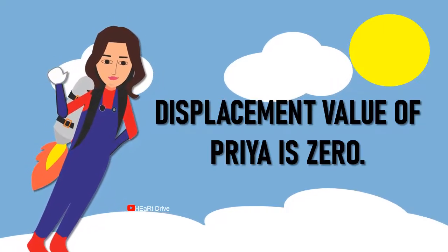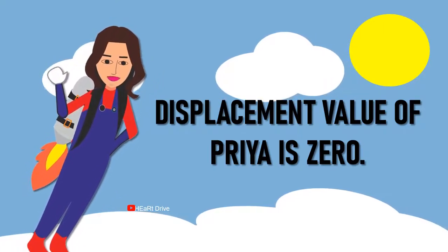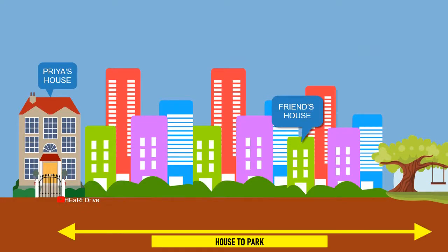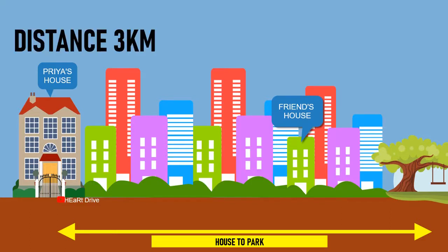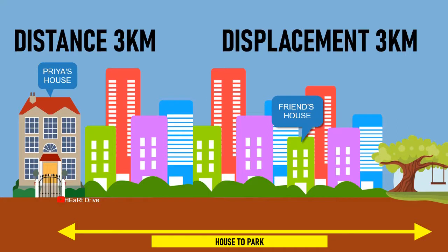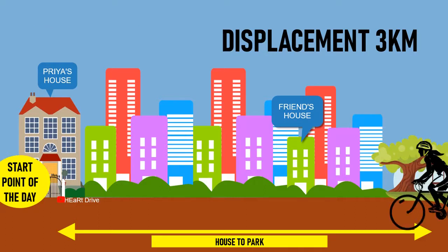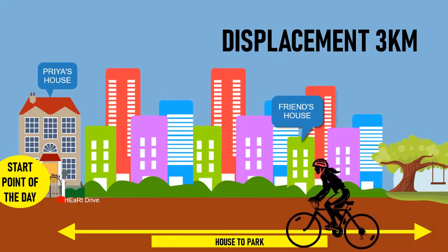Do you wonder how? Let's learn through the example by analyzing it step by step. Priya cycles three kilometers from her house to the park. The total path length covered is three kilometers, so the distance is three kilometers. Displacement is the path length between start point and end point — the path length between Priya's house and the park is three kilometers, so the displacement is also three kilometers.